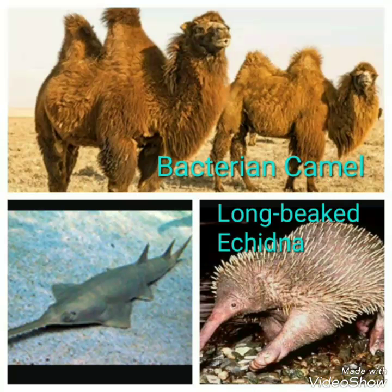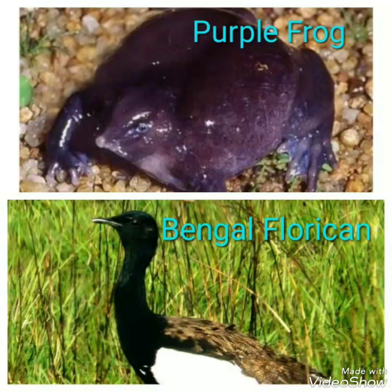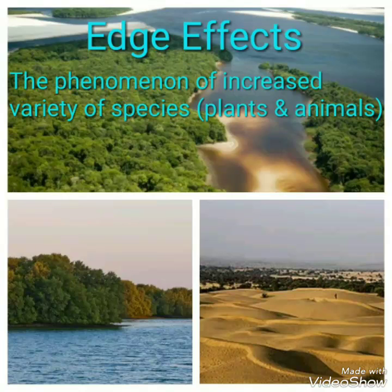Next is the long-beaked echidna, found in the grassland or highland of New Guinea. Pristis is the cartilaginous fish listed within the top 10 edge species. Purple frog is found in the Western Ghats, and the Bengal florican is found in grassland.